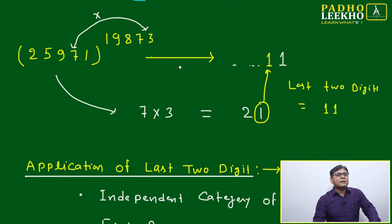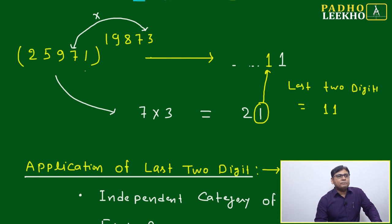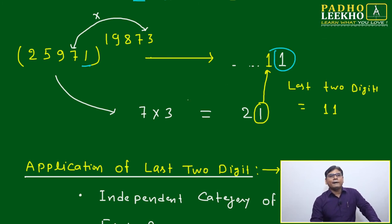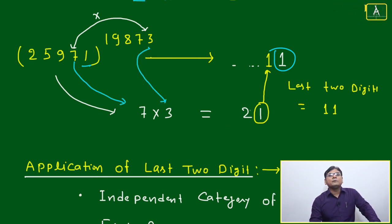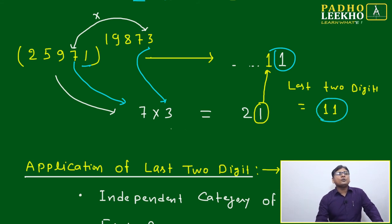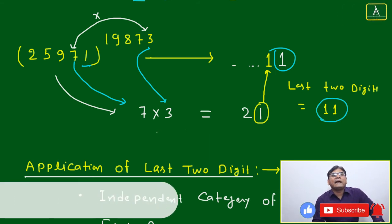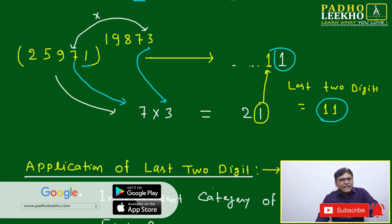One more example with a large number: 25,971 to the power 19,873. The number ends with 1, so unit digit is 1. The second last digit of the base (25971) is 7. The unit digit of the power (19873) is 3. Multiply: 7 × 3 = 21. Unit digit is 1. So the last two digits of 25,971^19,873 are 11.